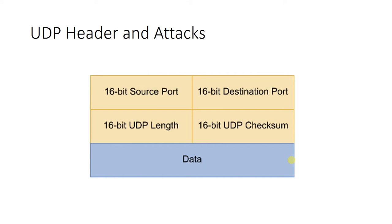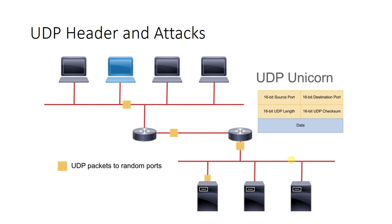This is one type of attack that we see with UDP. But most attacks that we see with UDP involve exhausting the resources on the network. In this example, let's assume that we have an attacker whose machine wants to consume all of the resources on the network — on the subnet this device is on, or perhaps the subnet that the server farm is on.